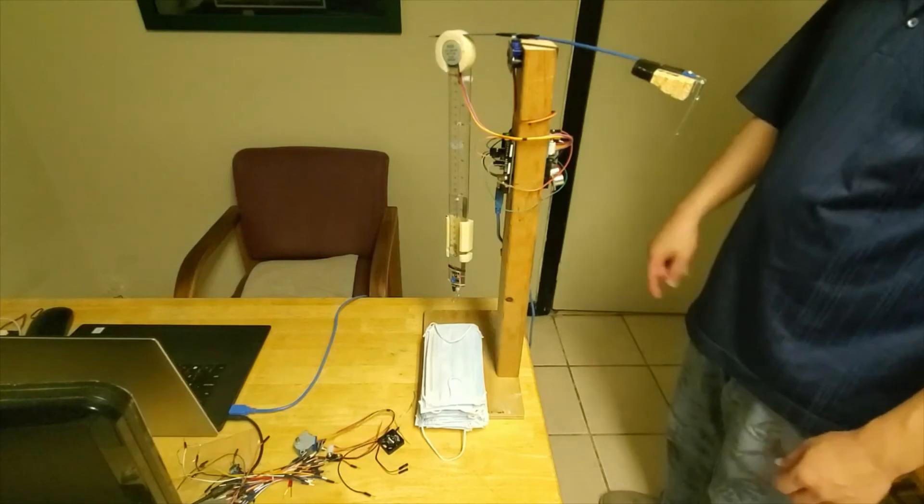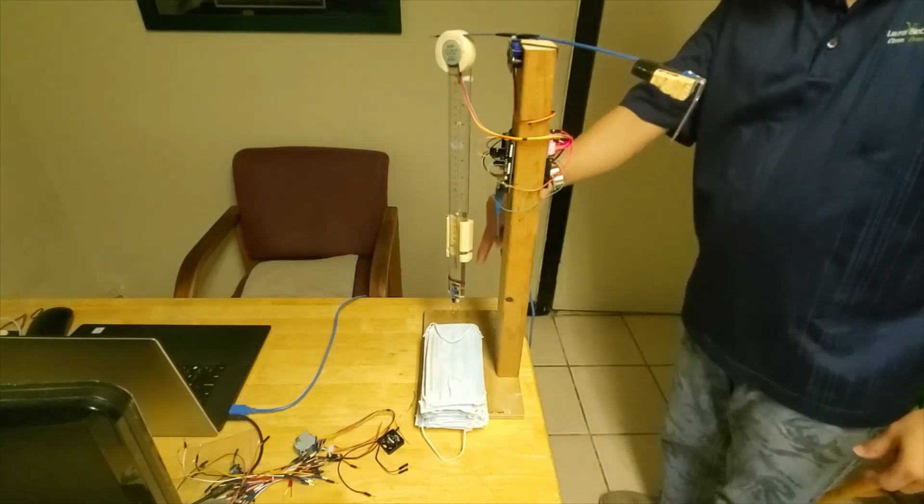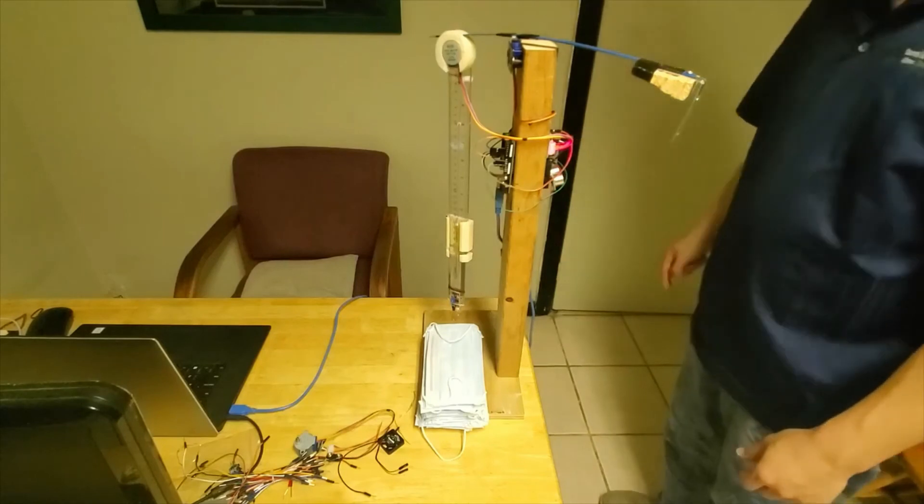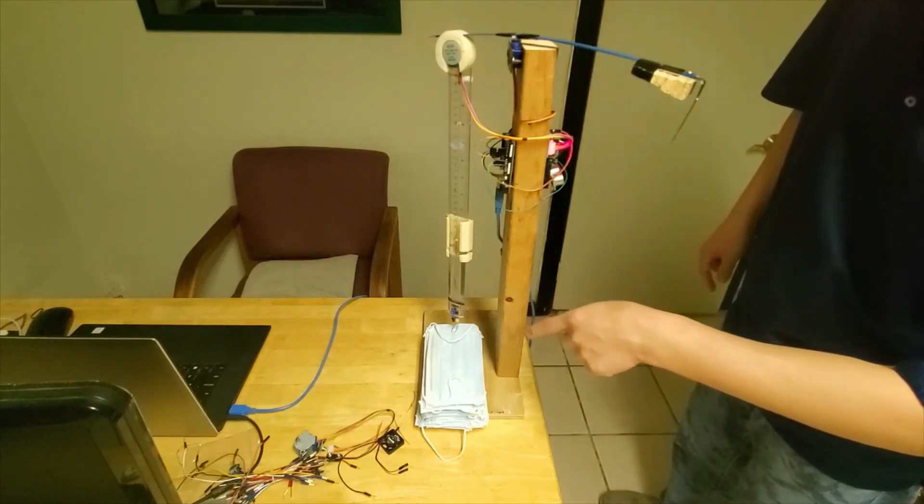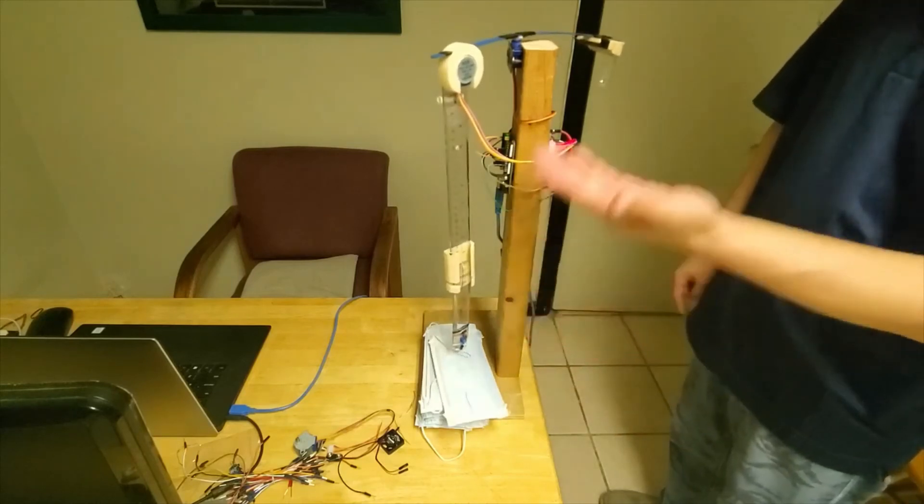When a person walks over here, this sensor senses a person and the arm starts moving down. Once the arm hits the face mask, it's going to rotate, bring it to the center and bring it up.